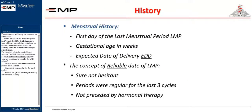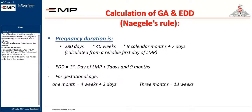From the menstrual history we are concerned mainly with the first day of her last menstrual period, LMP, which should be decided precisely. From this we can calculate gestational age in weeks and the expected date of her delivery. These are calculated according to Naegele's rule. For Naegele's rule to be applicable and accurate, the LMP should be a reliable one. The criteria of reliability are: it should be a sure date and the patient is not hesitant; her periods were regular for the last three cycles; and this last period was not preceded by any hormonal therapy. Naegele's rule and how to apply it for calculation of gestational age and the expected date of delivery will be discussed in the face-to-face session.